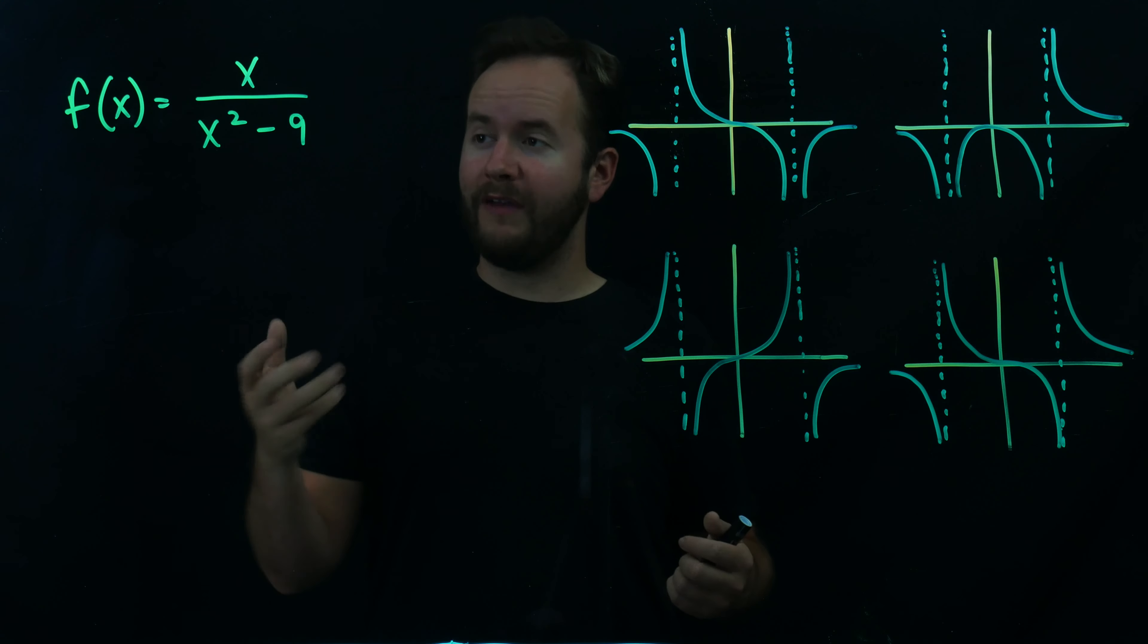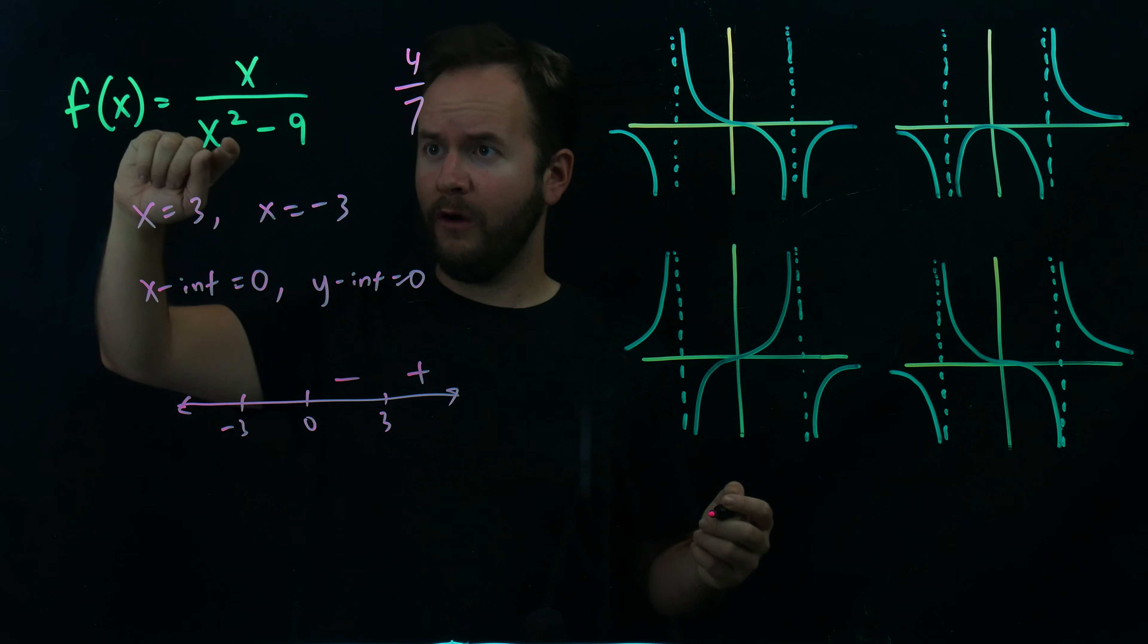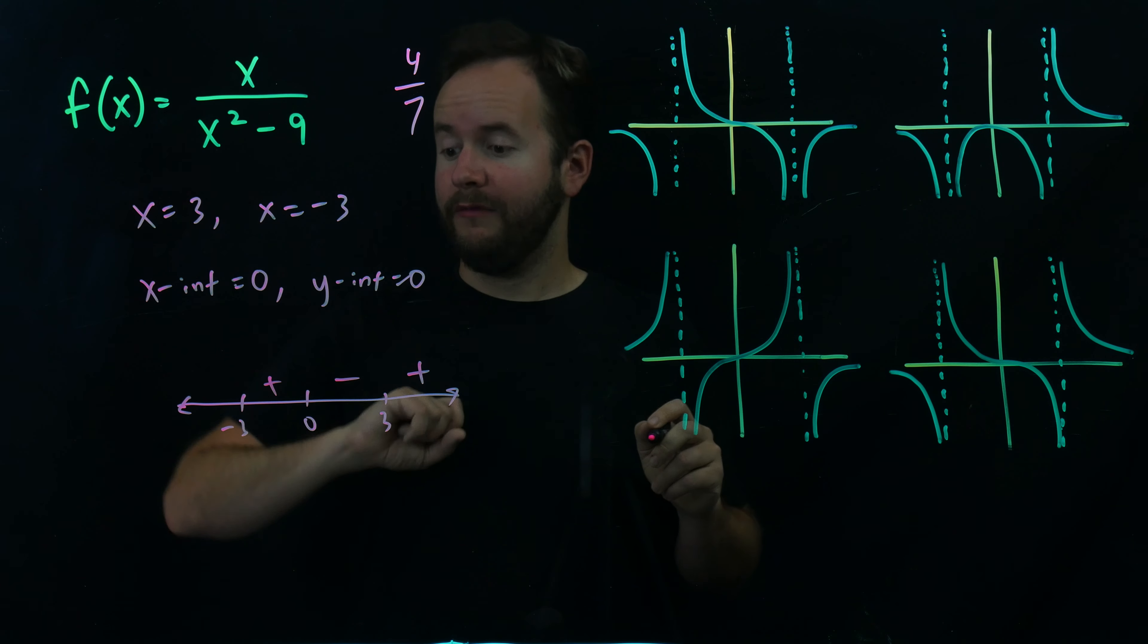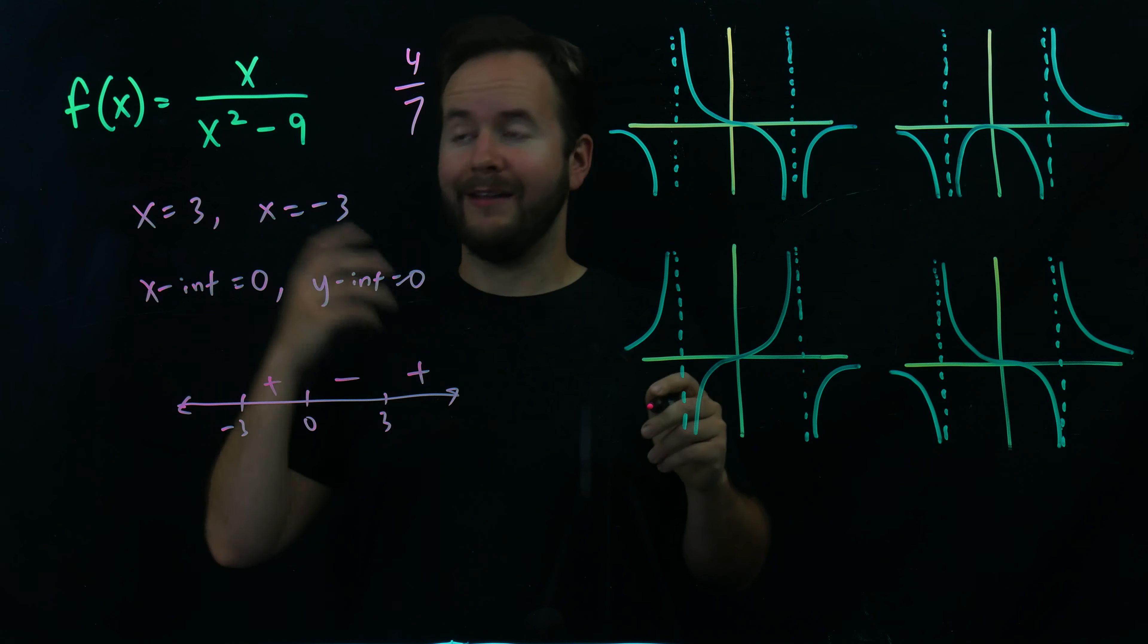Keep playing the same game. Pick your favorite number between negative 3 and 0, like negative 1. When I plug that in, I get negative over negative, which is a positive. And then pick your favorite number less than negative 3, like negative 4. When I do that, I get negative 4 over positive 7. Negative 4 over positive 7 is a negative number.